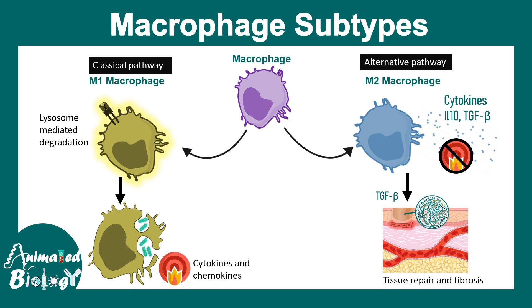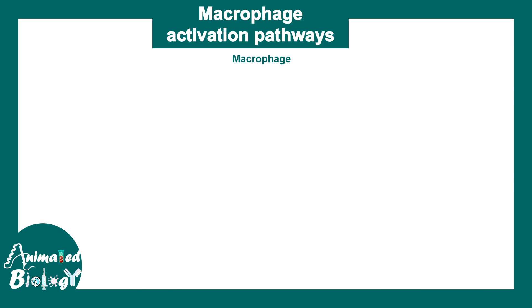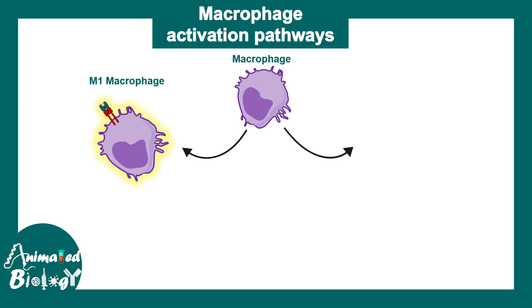In this video we'll be talking about the differences between M1 and M2 macrophages. Macrophages are phagocytotic cells of the innate immune system that can engulf pathogens. They have two different flavors — M1 and M2 macrophages — which have distinct characteristics, different clinical relevance, different surface markers, and more.